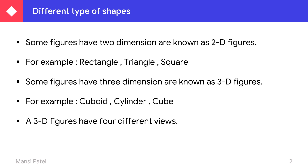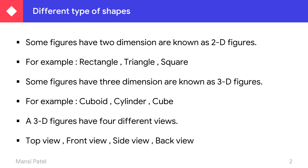3D figures have four different views if you want to look at them. You can see three different views: the top view, front view, side view, and back view. You can't see 2D figures with different views because they have only two measurements, and we can draw all those figures on a plain paper. That's why 2D figures do not have views.